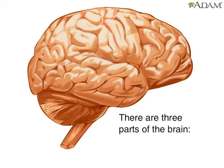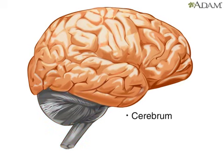There are three major components of the brain. The cerebrum is the largest component, extending across the top of the head down to ear level. The cerebellum is smaller than the cerebrum and located underneath it,